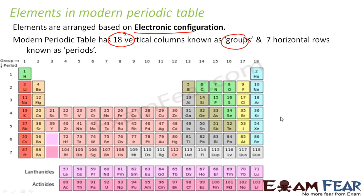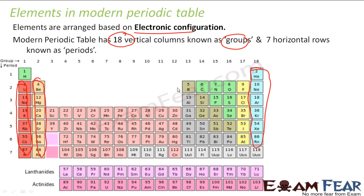They are called groups because elements in a group share the same chemical property. If you take elements in a vertical column, they have the same chemical property, which is why they are called a group. A horizontal bunch of elements does not share the same chemical property, so it is not called a group.